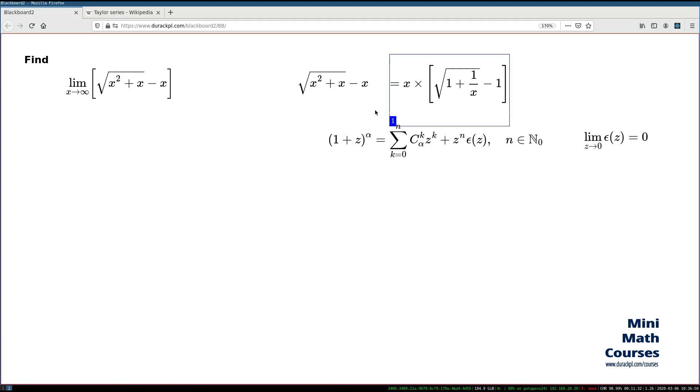This is a version of Taylor expansion for binomial function and this is the one we're going to use for the second factor in here. Before we do so,